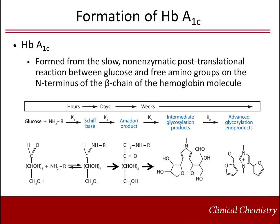The formation of hemoglobin A1C occurs in humans at a slow rate as a post-translational modification of hemoglobin throughout the life of the red cell. Hemoglobin A1C is formed by the non-enzymatic reaction of glucose with the amino-terminal valine residues of the beta chains of hemoglobin A. Glucose binds reversibly to hemoglobin as an aldamine or Schiff base, and this adduct then undergoes an Amadori rearrangement to form a stable ketoamine. The formation of the stable ketoamine is irreversible.